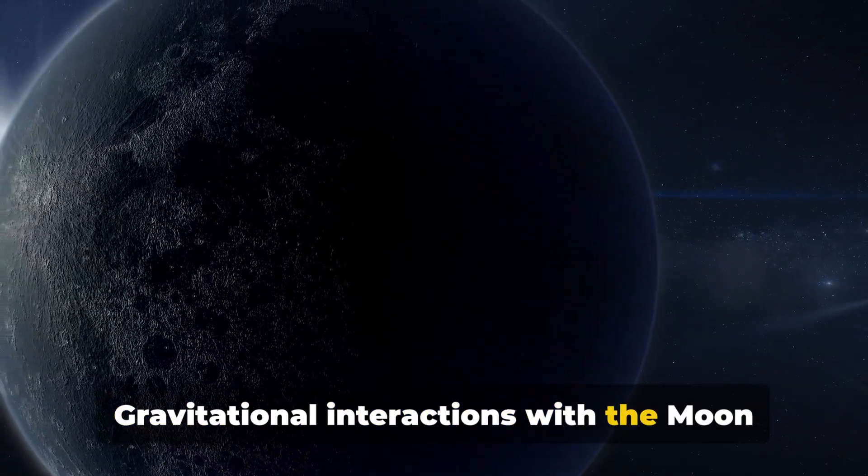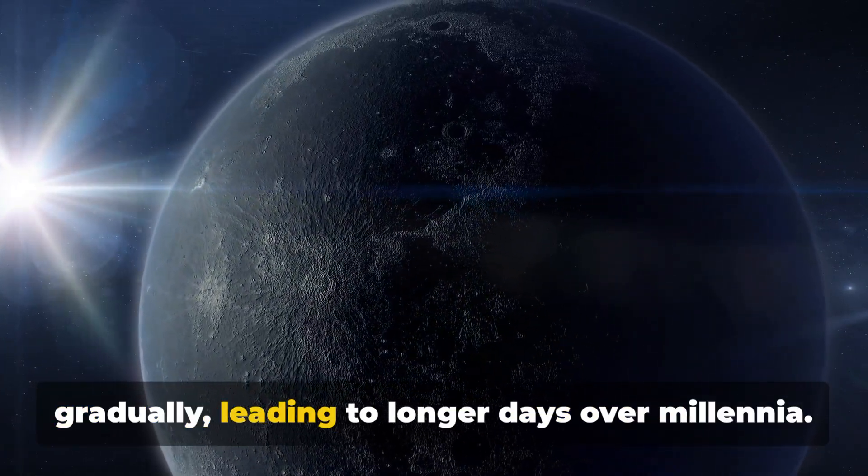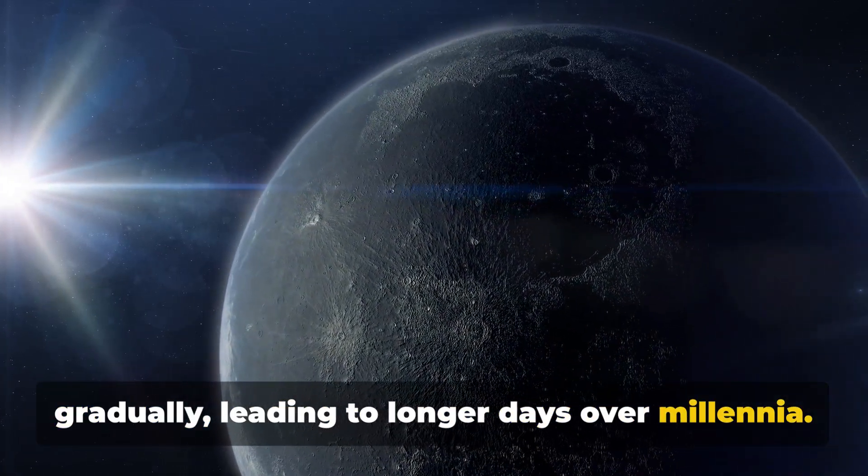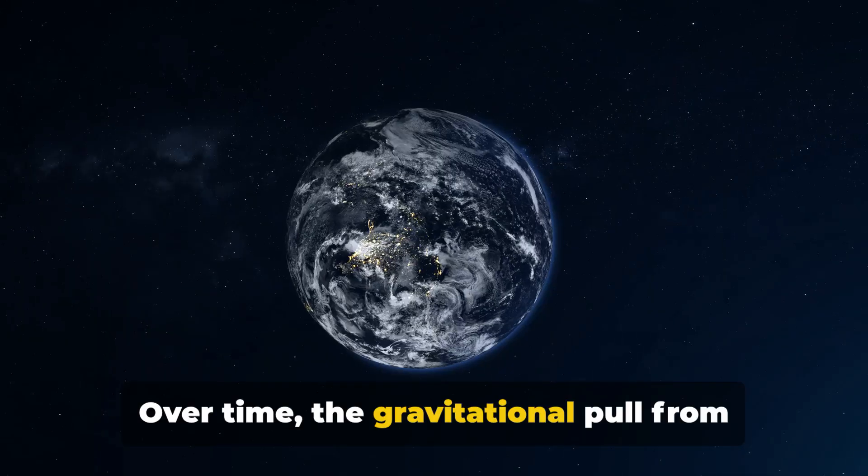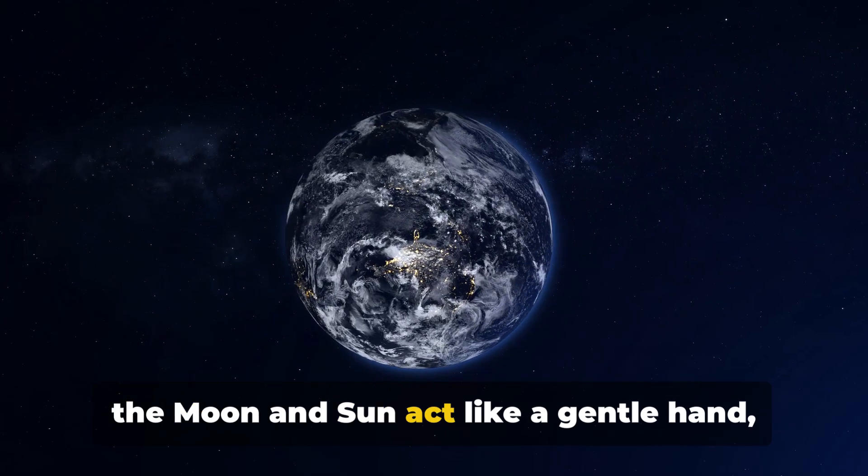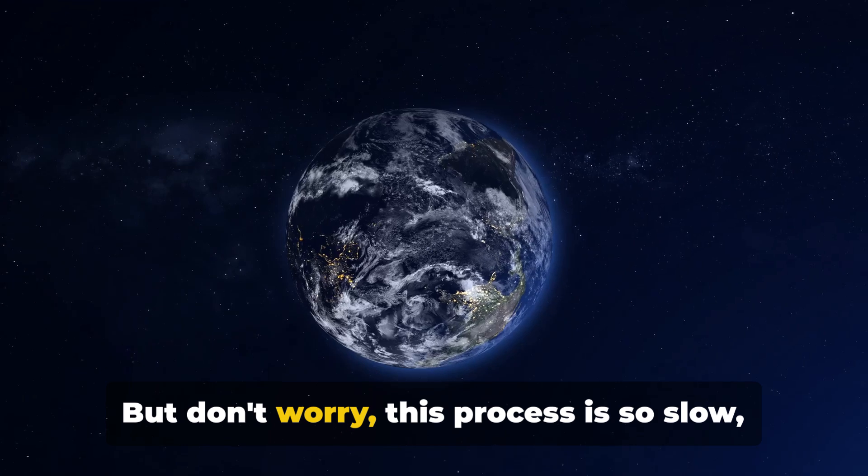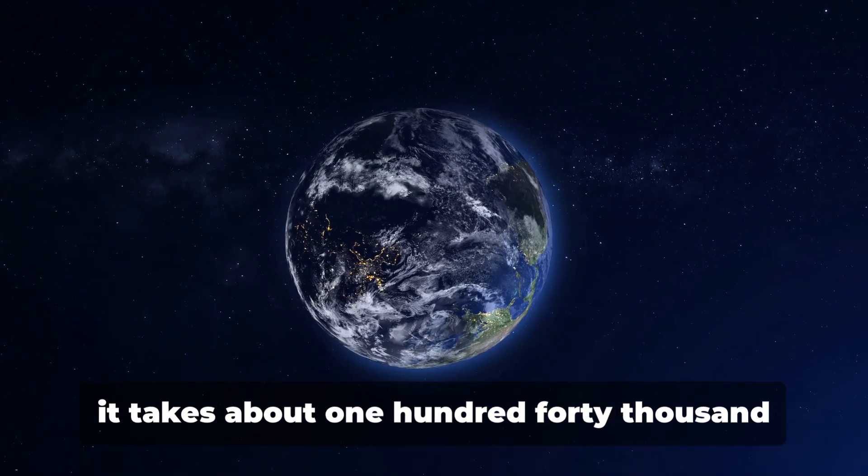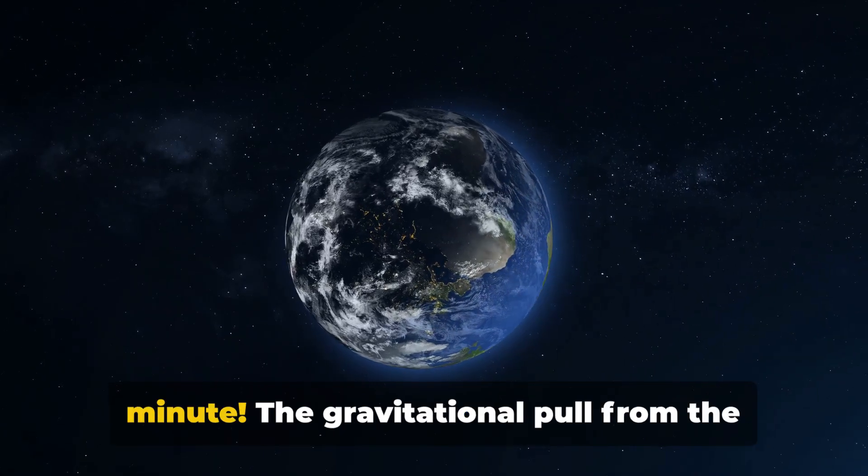Gravitational interactions with the Moon and Sun do slow Earth's rotation very gradually, leading to longer days over millennia. Now, imagine the Earth as a spinning top. Over time, the gravitational pull from the Moon and Sun act like a gentle hand, gradually slowing the spin. But don't worry, this process is so slow it takes about 140,000 years for our day to lengthen by a single minute.